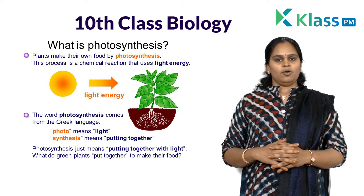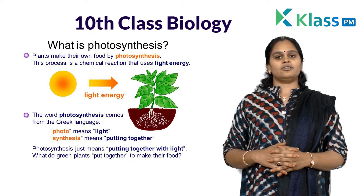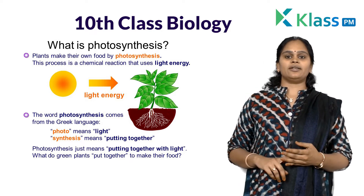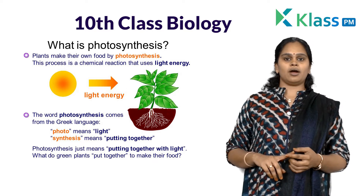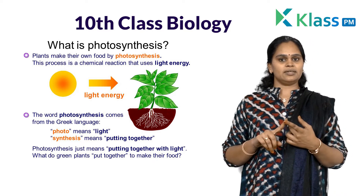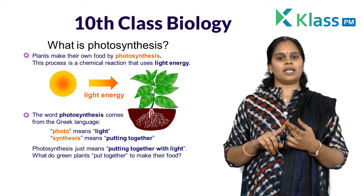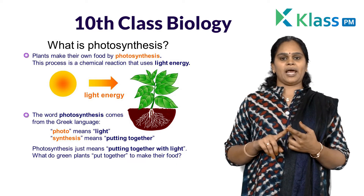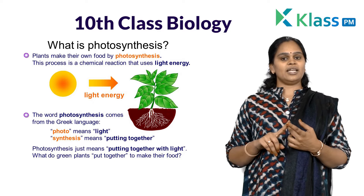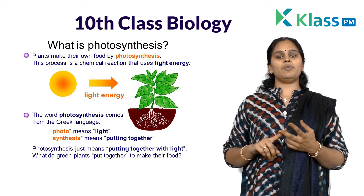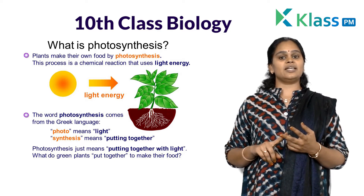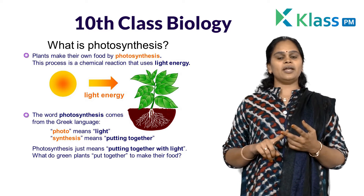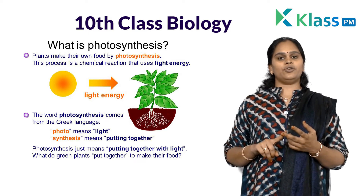What are the ingredients or factors involved in photosynthesis? The main factors are: first, light, which comes from the sun — sunlight will be absorbed by the plants. The second factor is carbon dioxide, which is necessary for photosynthesis.